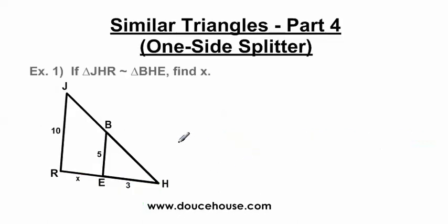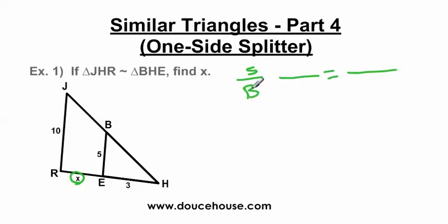Moving on, we're going to solve this triangle and find X. It says if triangle J-H-R is similar to triangle B-H-E, we need to find X. With similar triangles, I always do small triangle to big triangle — you're welcome to do big over small, but make sure you do what your teacher tells you. It's not easy to tell which sides correspond, so I have my students draw these triangles again. The first step is don't be lazy — draw the triangles and make them look like what you have in the problem.